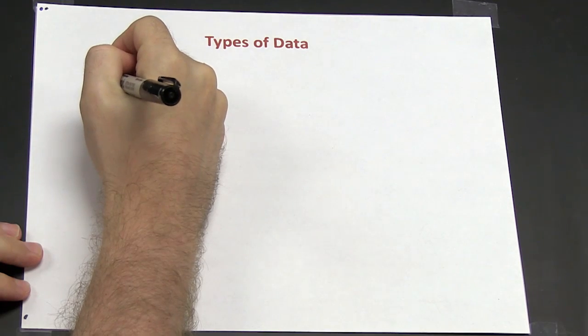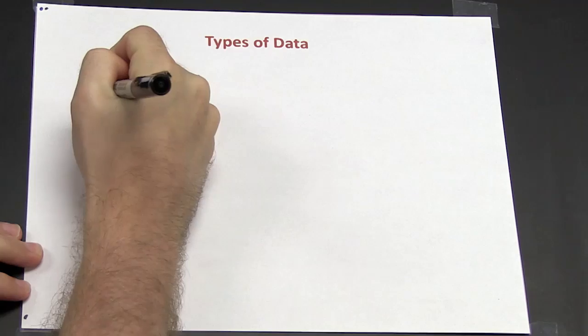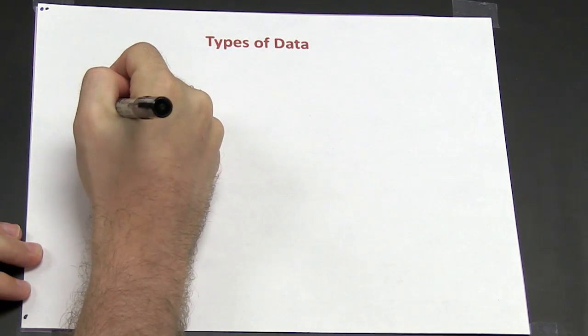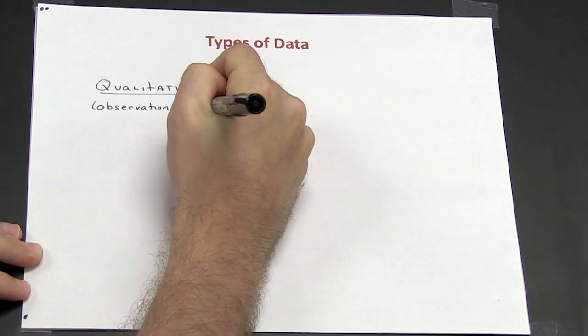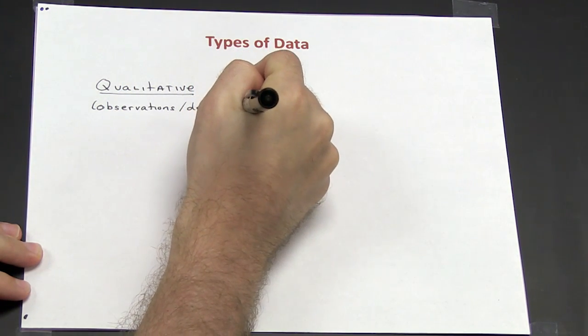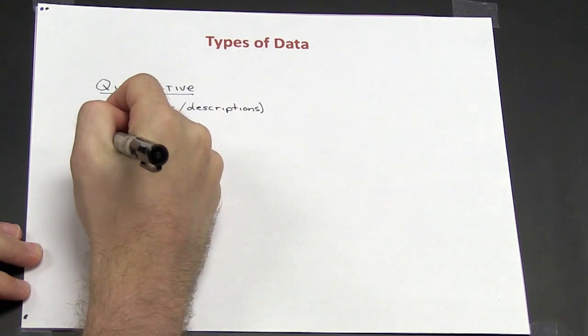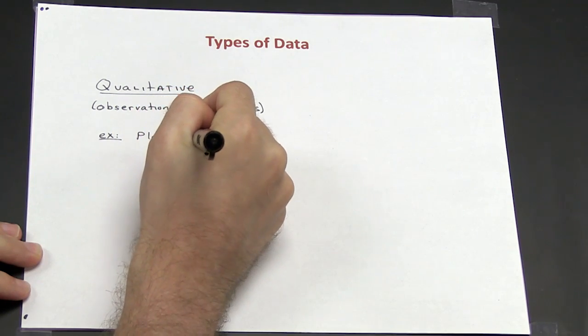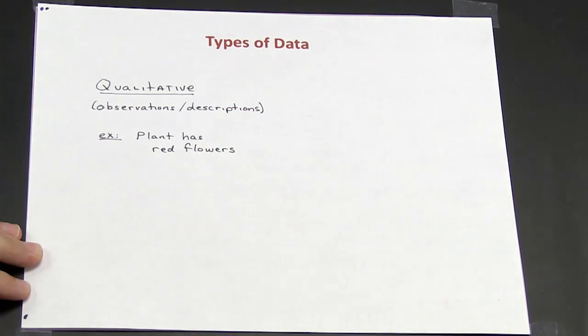One type of data is known as qualitative data, and qualitative data is observations and descriptions that are made during an experiment. So for example, if I said that a plant has red flowers, that would be an example of a qualitative observation.